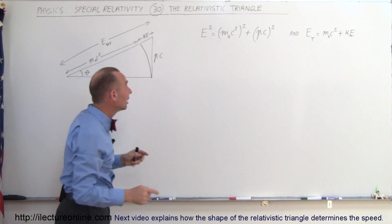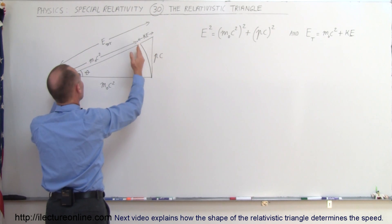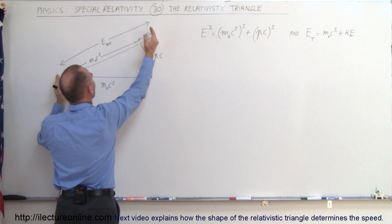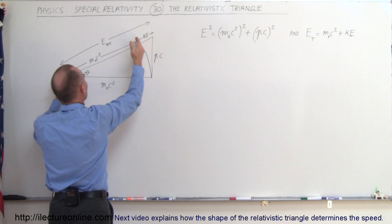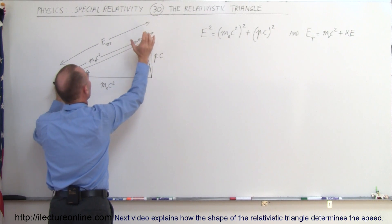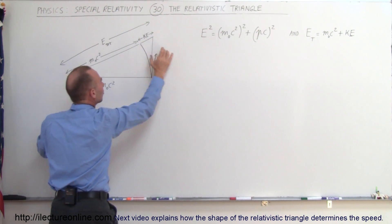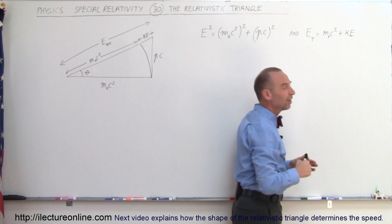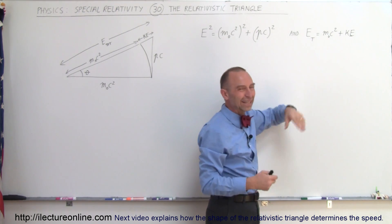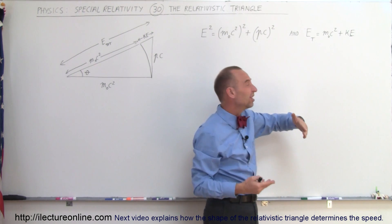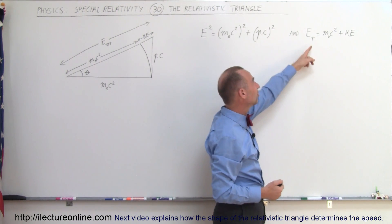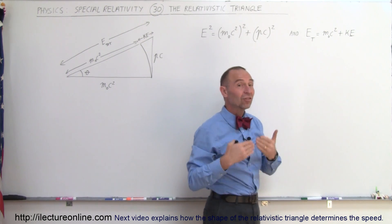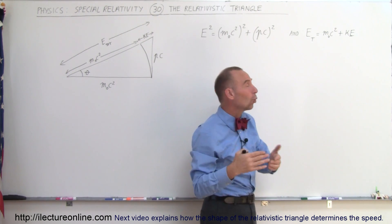In addition, if you look at the hypotenuse, this length plus this length gives us the total energy — the rest mass energy plus the kinetic energy equals the total energy. Sometimes I'll put a subscript T to indicate total energy, but if it doesn't have any subscript, just E by itself, it does indeed mean total energy.